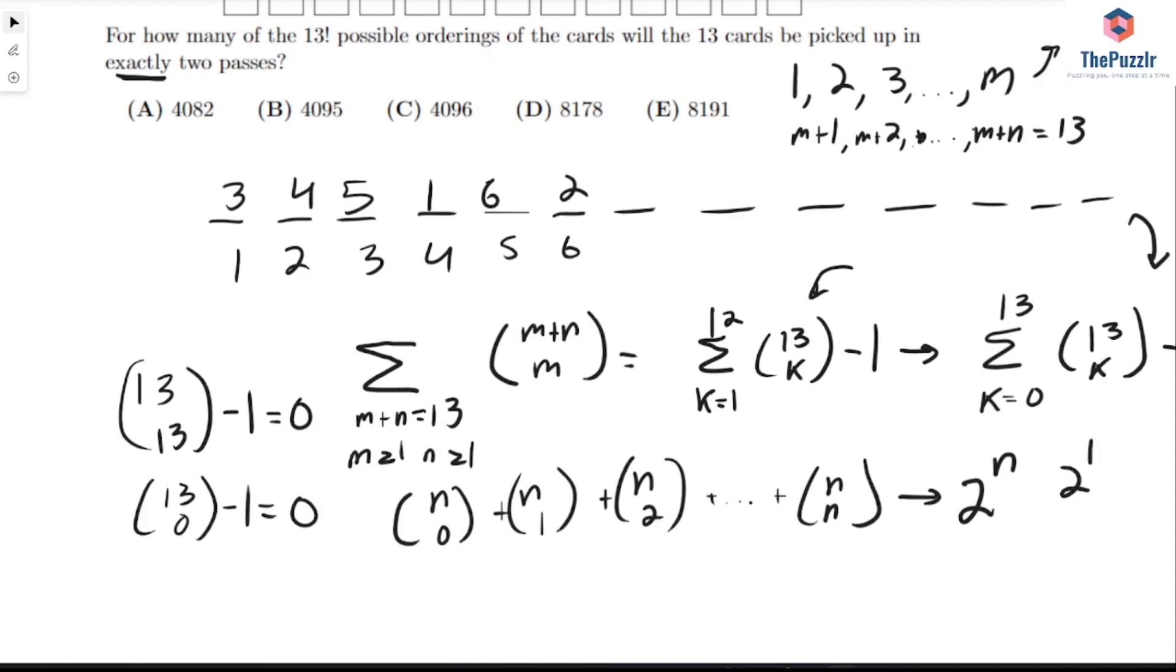So this is just 2 to the 13. So here, let's break this off. So this equals 2 to the 13. And there's 14 K values, 2 to the 13 minus 14. And that's going to give us 8178 as our answer. And we're done.